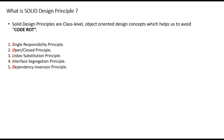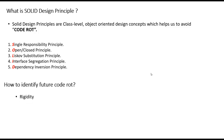If a developer is developing code, how can we identify that he is not creating code rot for future developers? What are the things we can look at in his code to confirm it will not create problems? One thing we can look for is rigidity. Rigidity is a condition where making changes in one class forces us to make changes in other classes as well.